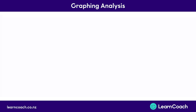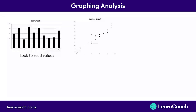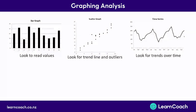Just a quick recap on the graphs we looked at. The first graph was a bar graph, and you just have to read values off it. The second graph was a scatter graph — a whole lot of points where you needed to look for trend lines, outliers, and groups. The third graph was a time series graph, where you were looking for trends, fluctuations, and changes over time.